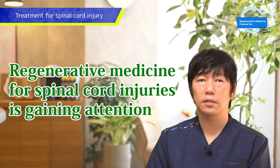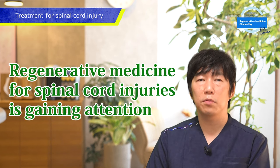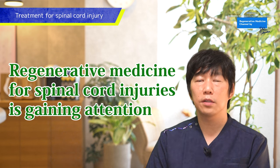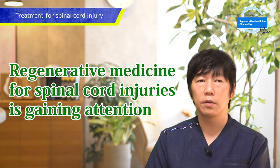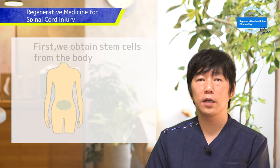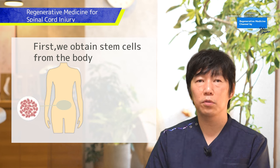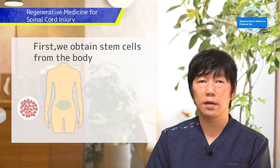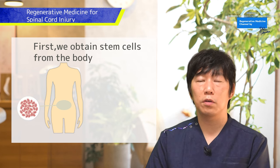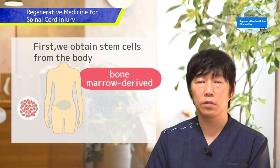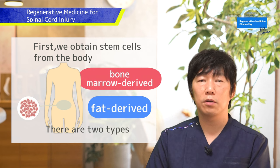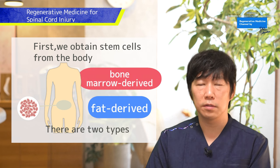Therefore, regenerative medicine using stem cells for spinal cord injuries has been gaining attention recently. In Japan, there are two types of regenerative medicine for spinal cord injuries: one using stem cells from bone marrow and the other from fat.